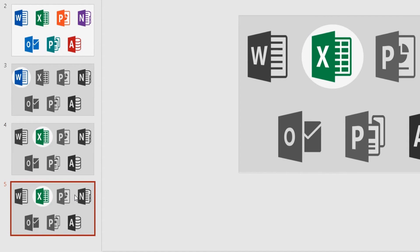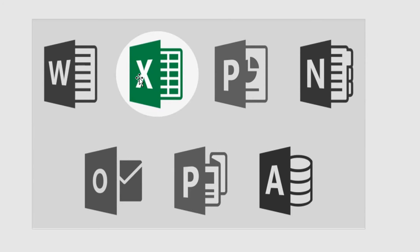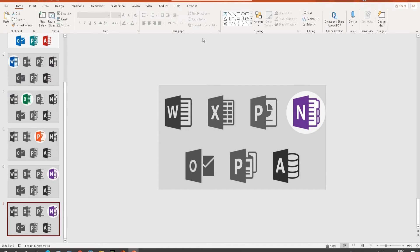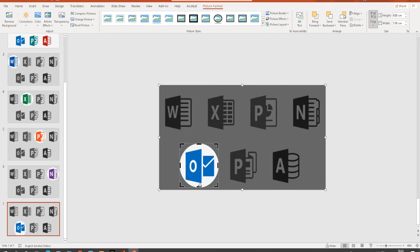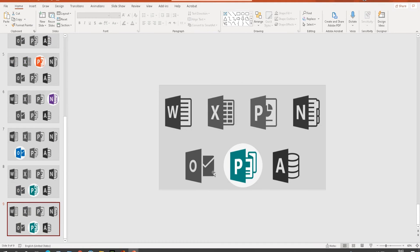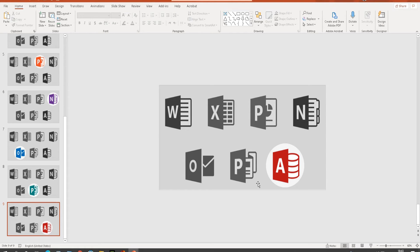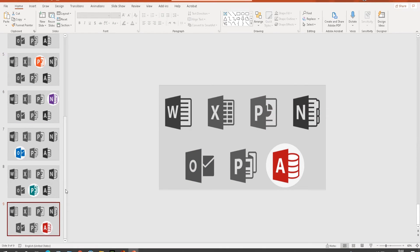I right-click, duplicate, and repeat the same process for each remaining icon. I'm going to fast-forward the video while I place the spotlight on each of the different icons. After fast-forwarding, the spotlight has been added on each slide for all the Office packages — Word, Excel, PowerPoint, Outlook, Publisher, and Access.